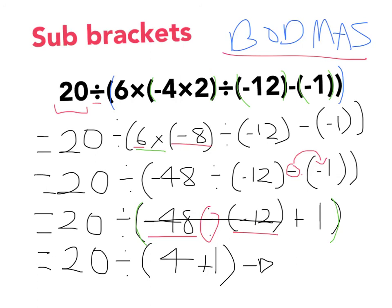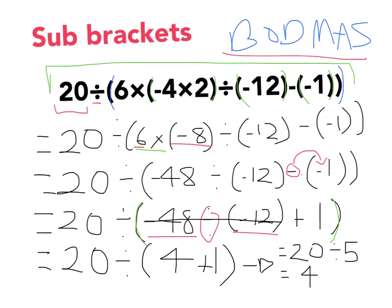So it becomes 20 divided by 4 plus 1. We need to write that as 20 divided by 5. 20 divided by 5 is 4. You were sitting there thinking, oh my gosh, how do I work this out? This is so hard. Not actually all that hard — really quite easy. All you need to do is follow the order of operations.